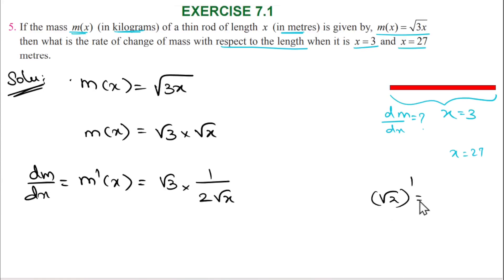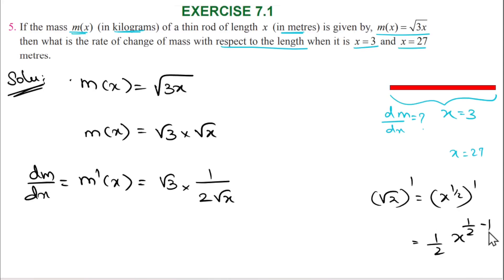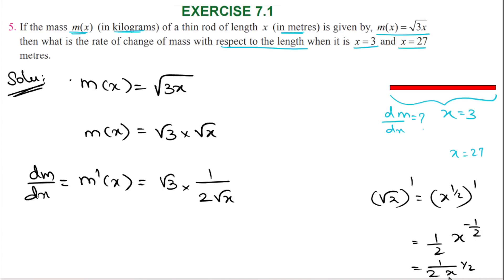We write root of x as x to the power 1 by 2. Now differentiating using the power rule: bring the power down, giving 1 by 2, and reduce the power by 1, so 1 by 2 minus 1 equals minus 1 by 2. Therefore, the derivative is 1 by 2 into x to the power minus 1 by 2, which is 1 by 2 root x.